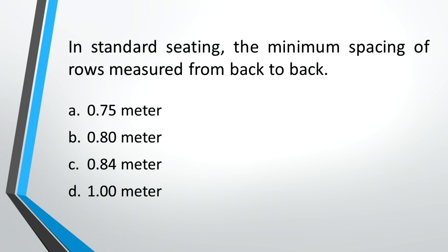In standard seating, the minimum spacing of rows measured from back to back. A: 0.75 meter, B: 0.8 meter, C: 0.84 meter, D: 1 meter. Answer: C, 0.84 meter.